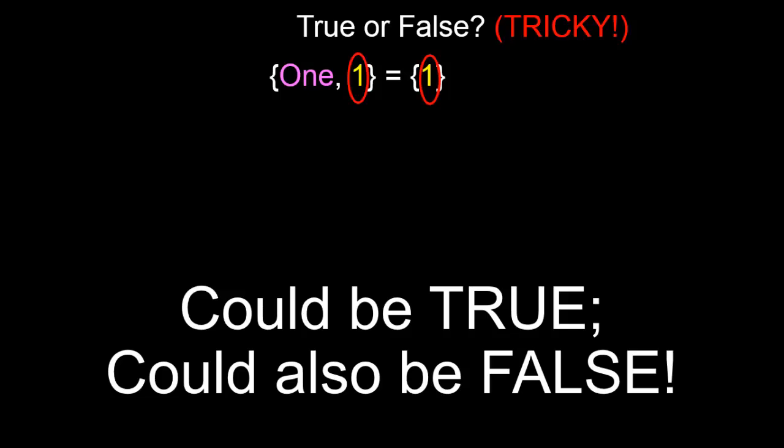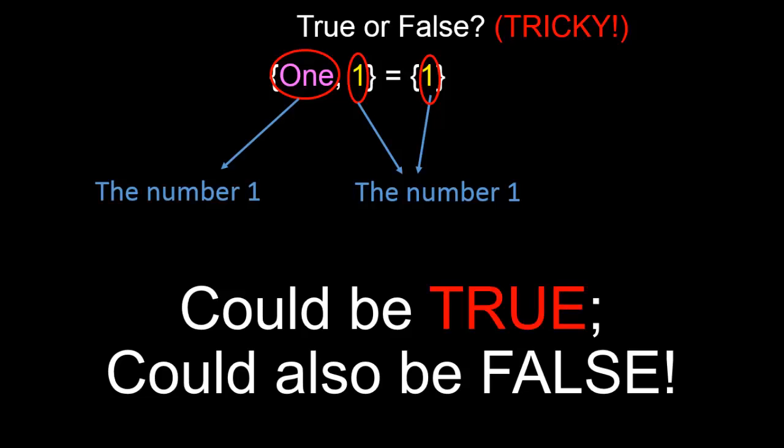If the Hindu-Arabic numeral 1 is a symbolic representation of the number one that we have in mind, and if the English word one also refers to the same number one that we have in mind, then yes, the two sets are exactly identical.